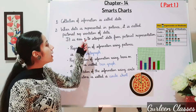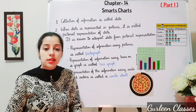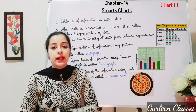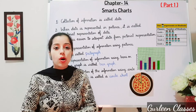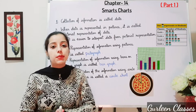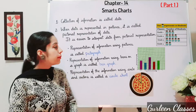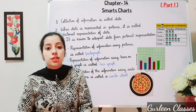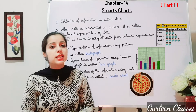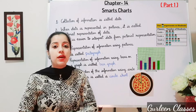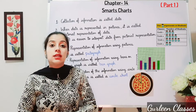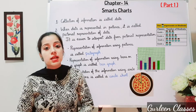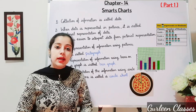Next, when data is represented in pictures, it is called pictorial representation of data. It is easier to interpret data from pictorial representation. For example, if I write so many numbers in front of you and the same way I draw some pictures, it becomes much easier to understand with the help of pictures compared to numerical data.